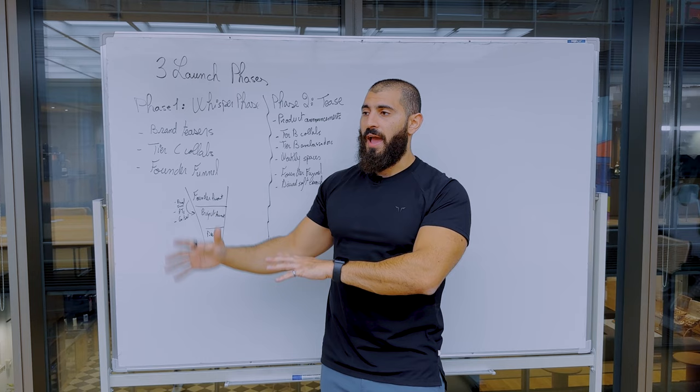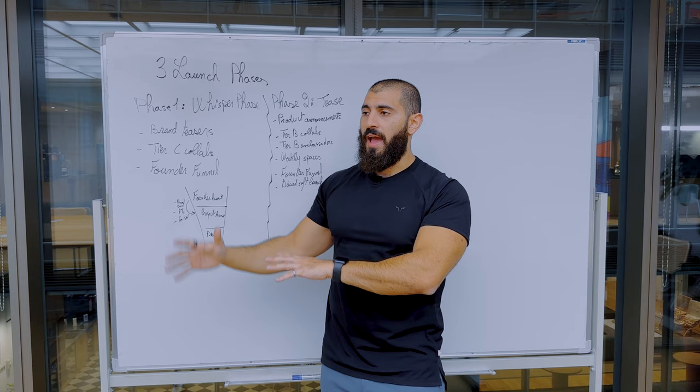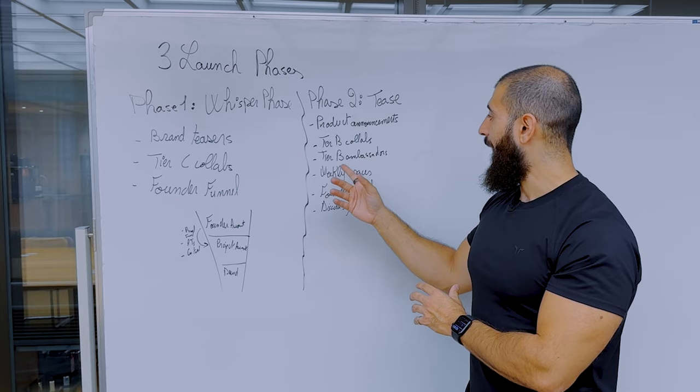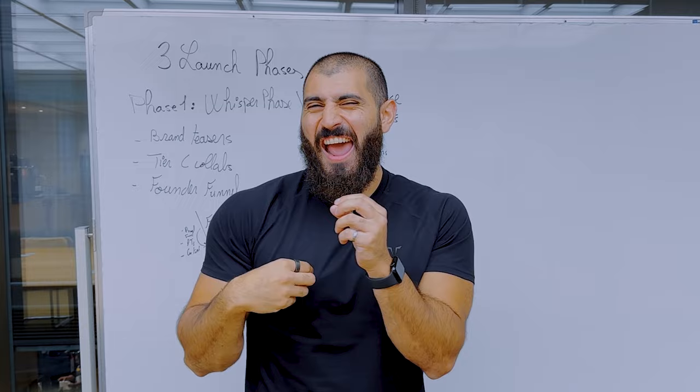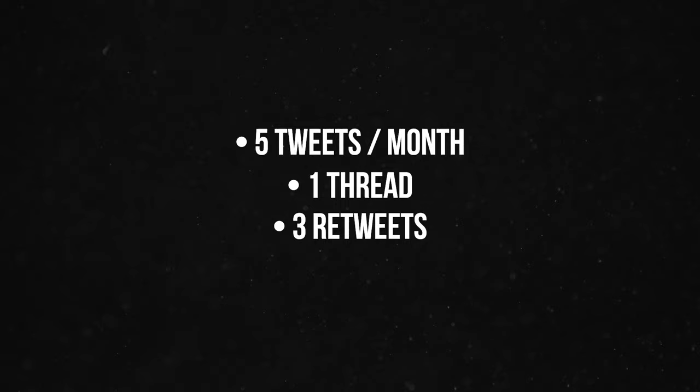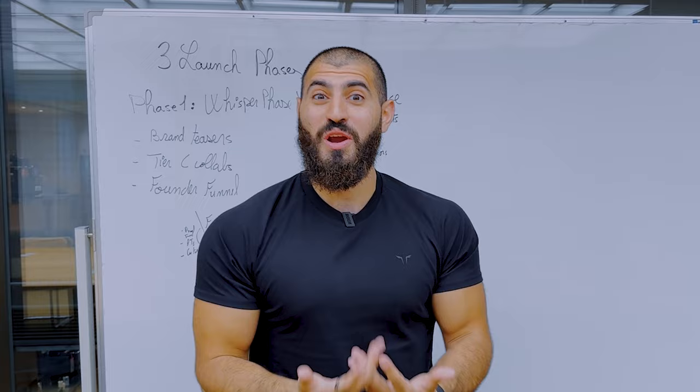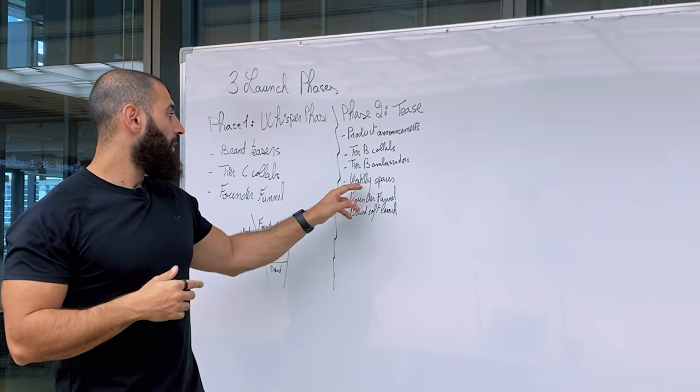Tier B ambassadors are typically creators with 5k to 15k followers, and rates vary anywhere from $200 per tweet up to $1,000. What you want to try to do is lock in long-term partnerships — creators like recurring revenue. Offer them something like $3,000 per month for five tweets, one thread, three retweets, and perhaps one weekly space. When you bundle that into monthly recurring revenue, creators prefer that over one-off activations; they want to feel like they actually work with brands.